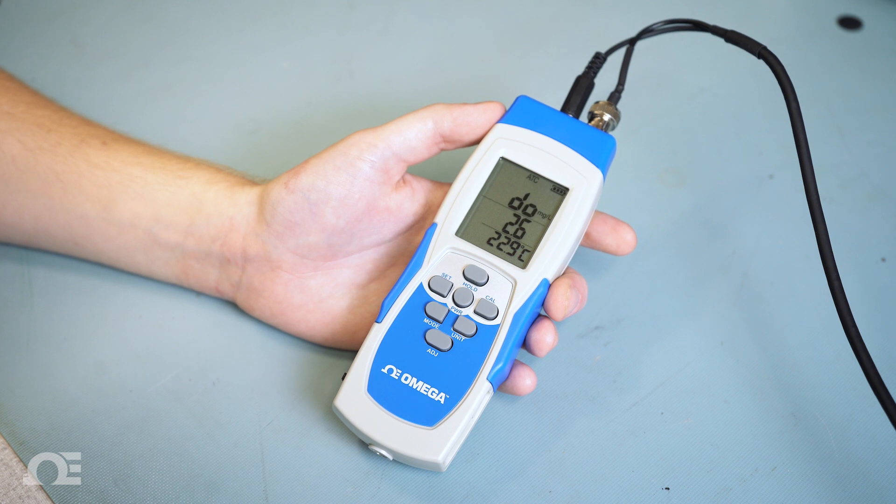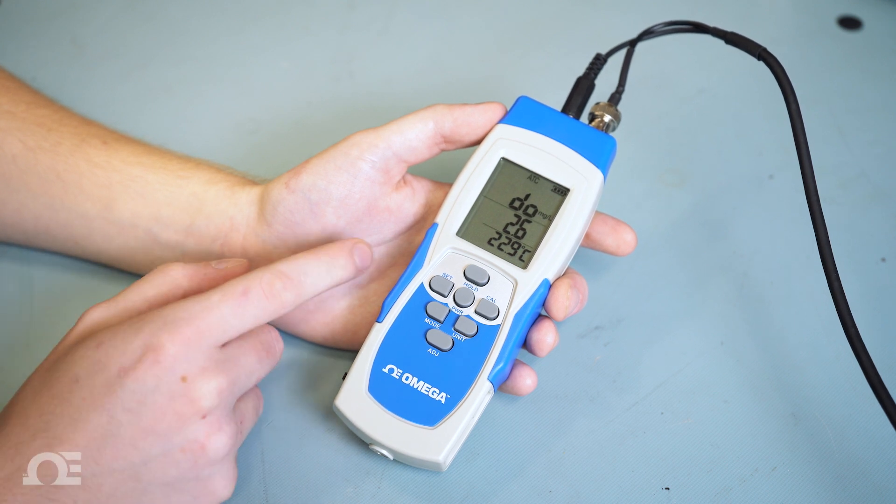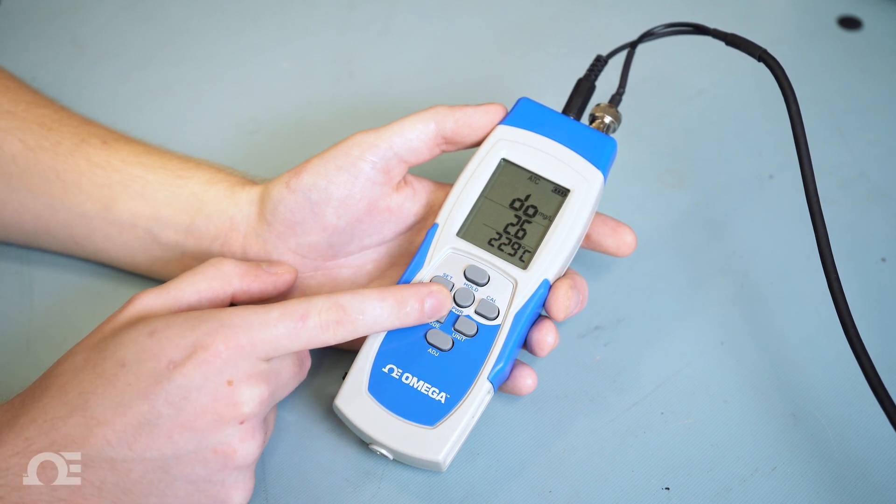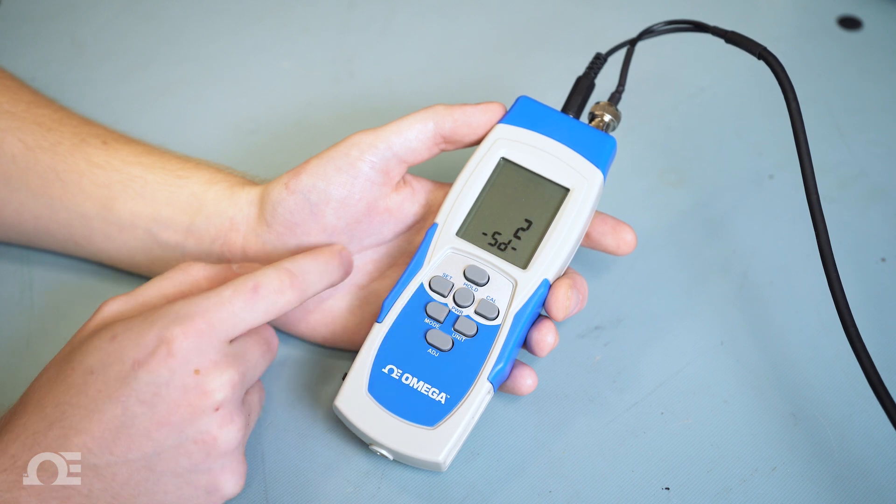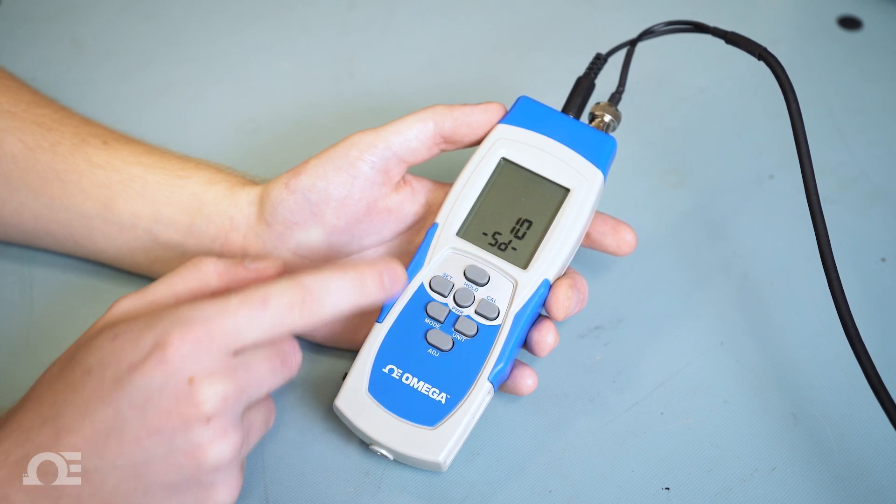With the unit turned on, press and hold the mode key until dash SD dash and a number appear on the screen. Select the data logging interval using the hold and adjust key.